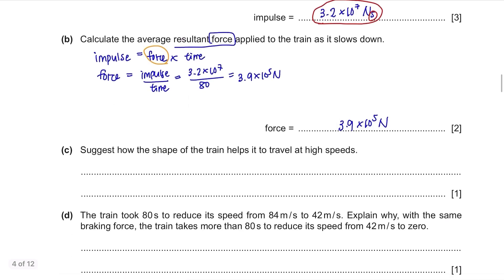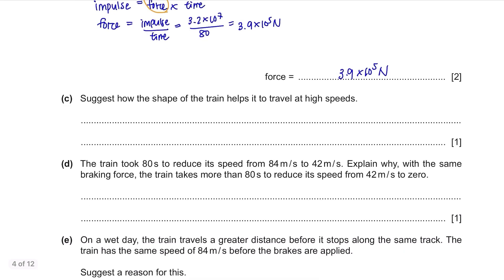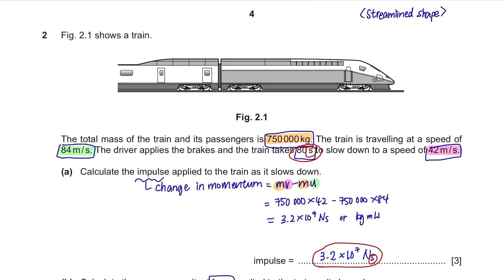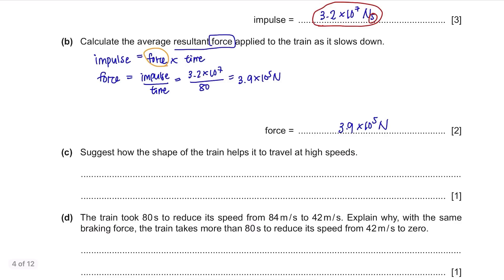Part C. Suggest how the shape of the train helps it to travel at high speeds. The train has a streamlined shape. This is the streamlined shape and this is the best known shape that reduces air resistance. So you can write, the streamlined shape of the train helps reduce air resistance experienced by the train.